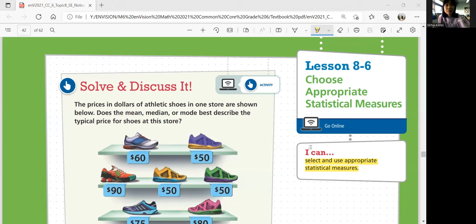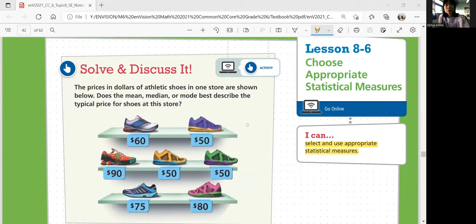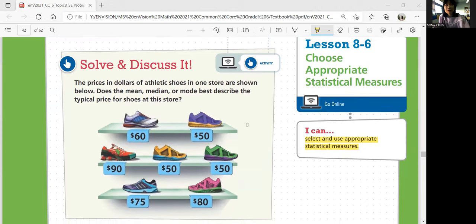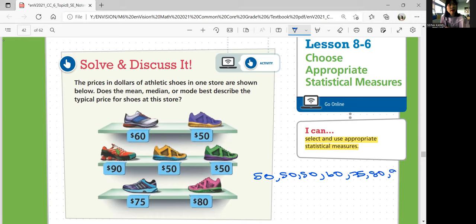Let's look at solve and discuss it. The prices in dollars of athletic shoes in one store are shown below. Does the mean, median, or mode best describe the typical price for shoes at this store? All right, so here are the values of our prices. Let's order this from least to greatest. So we got 50, 50, 50, and then 60, and then we got 75, and we got 80, and 90.